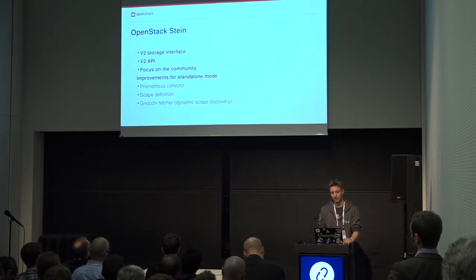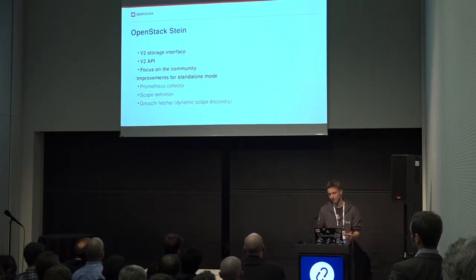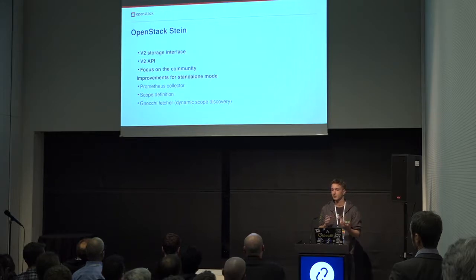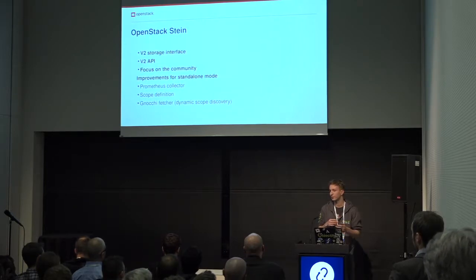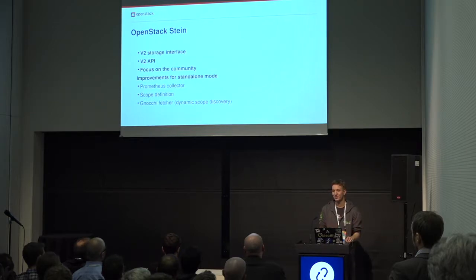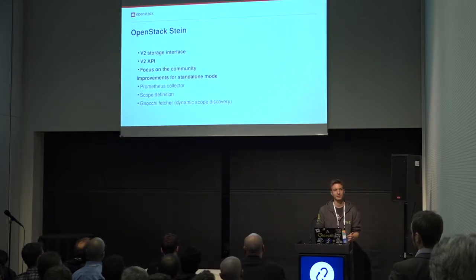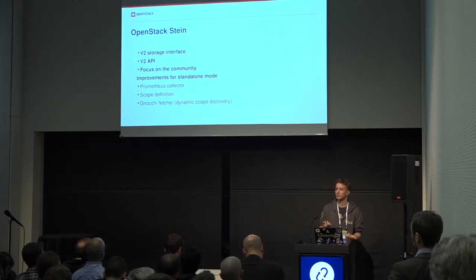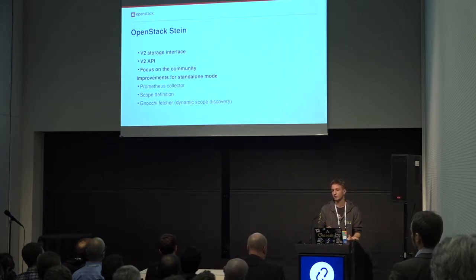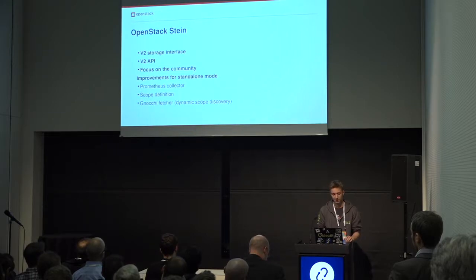There have also been improvements for standalone mode. The Prometheus Collector has been published. We now have a scope notion — in the past you had to group your data on a tenant basis, but now you can group on anything: domain, user, data center ID, anything. And there is a Gnocchi fetcher. Previously you had to apply rating rules to specific tenants; now you can do dynamic tenant discovery through Gnocchi, because in most clouds people want to rate every new tenant that is created.